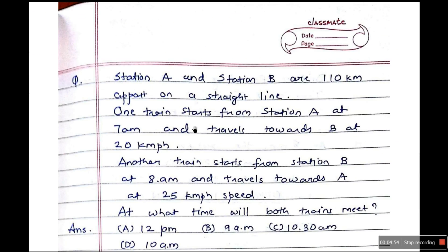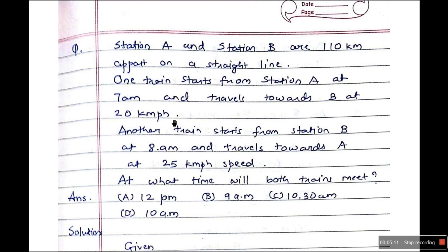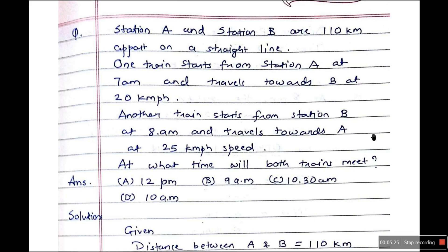Now the second quantitative train problem: Station A and station B are 110 kilometers apart on a straight line. One train starts from station A at 7 am and travels towards B at 20 km per hour. Another train starts from station B at 8 am and travels towards A at 25 km per hour. At what time will both trains meet? Options: A) 12 pm, B) 9 am, C) 10:30 am, D) 10 am.